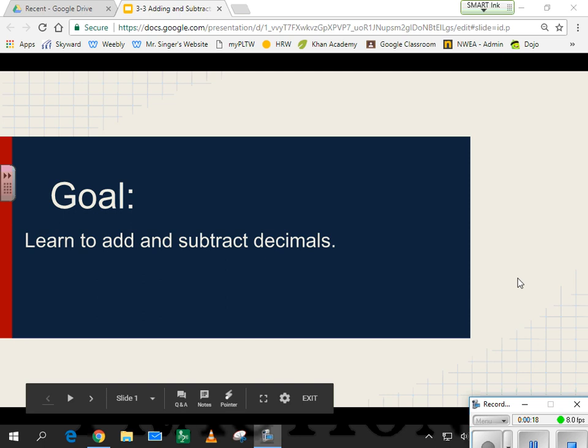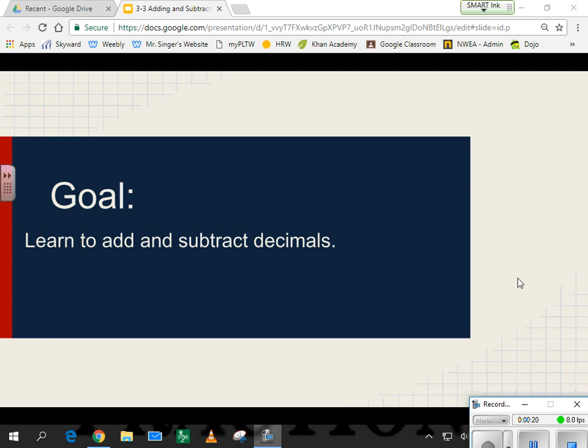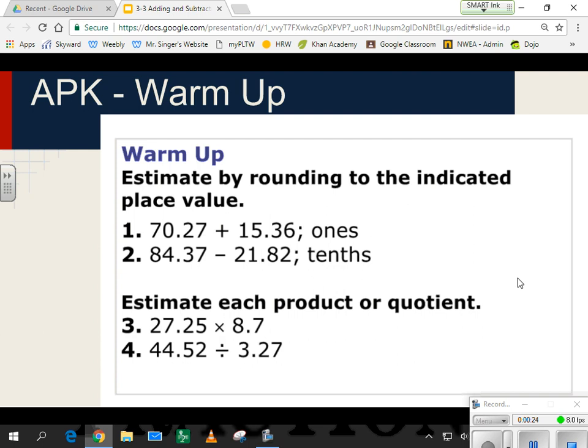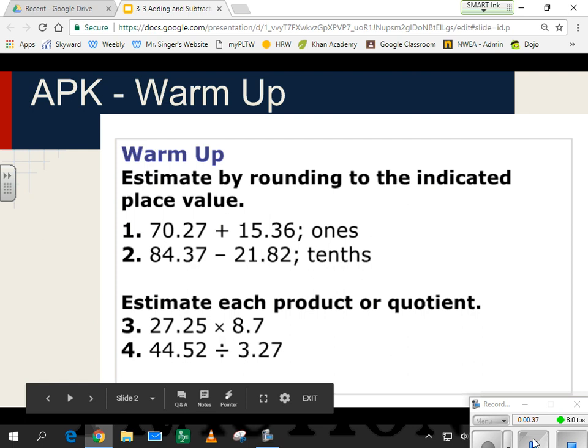Okay, now you've got today's date and page number down. Here's your warm-up for today. So do a couple of estimating problems for me for adding and subtracting to a specific place value. And then for three and four, using compatible numbers, find me an answer in product or quotient, depending on if you're multiplying or dividing.